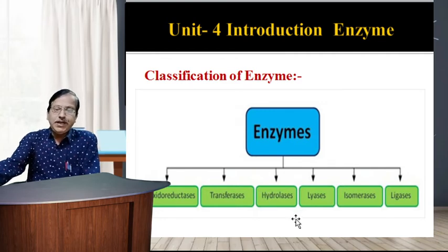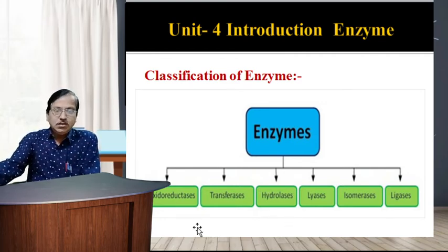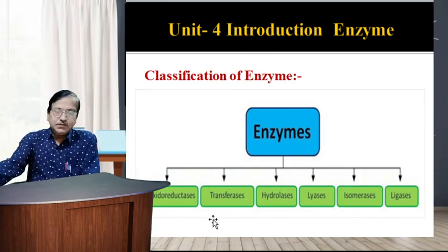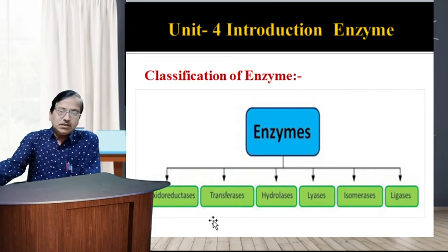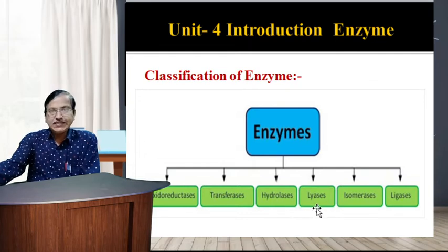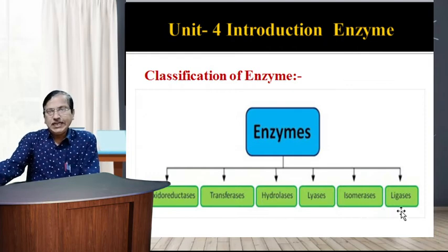The six classes of enzymes according to their type of reaction are: first, oxidoreductases; second, transferases; third, hydrolases; fourth, lyases; fifth, isomerases; and sixth, ligases.